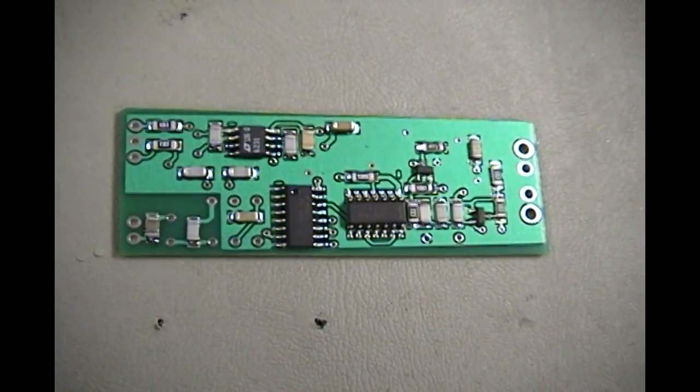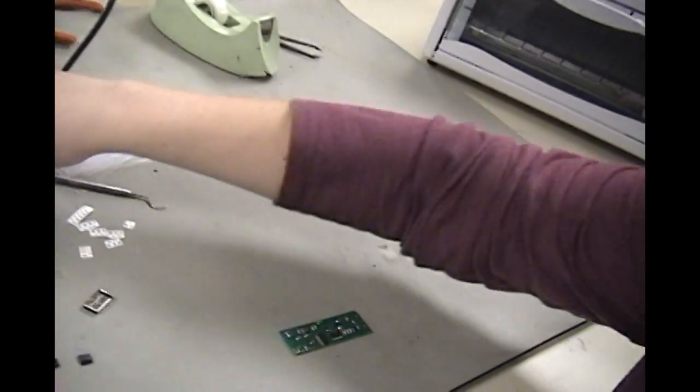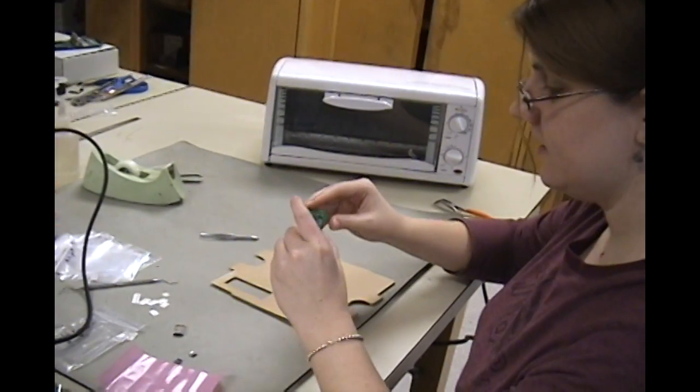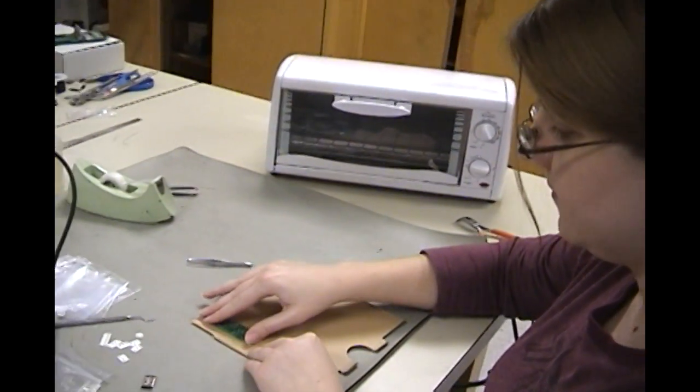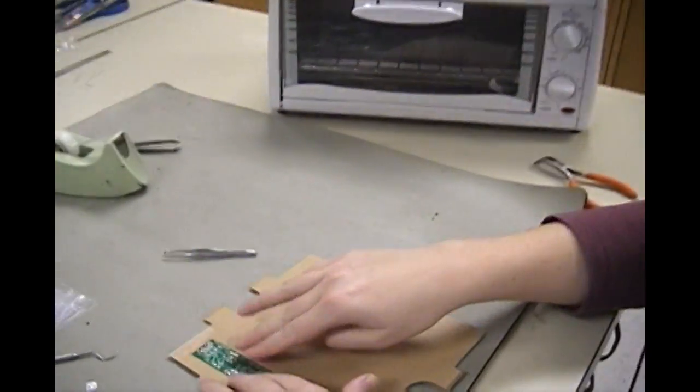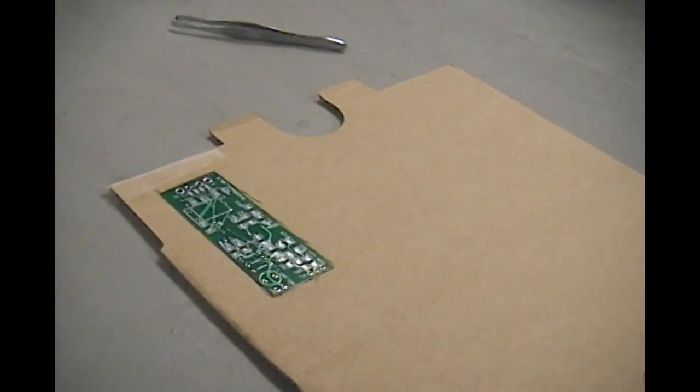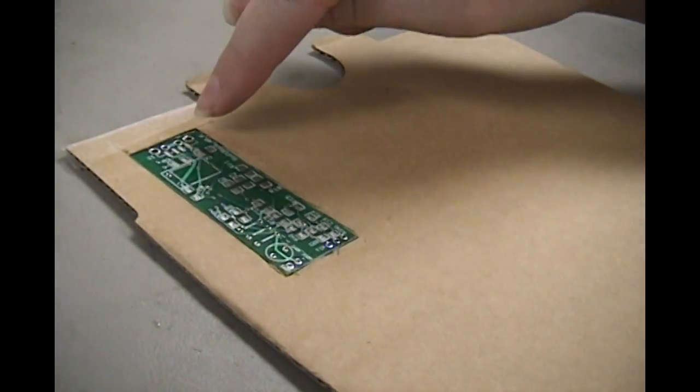So now what we're ready to do is we're ready to put solder paste on the other side. We can use the same cardboard box and now that these pieces are on here it should push the board about flush with the box if you've chosen a good thickness.